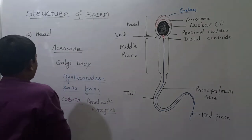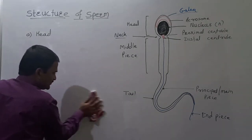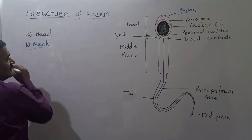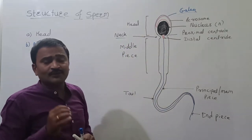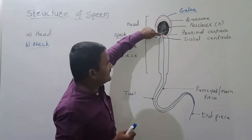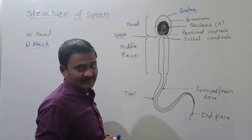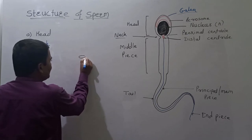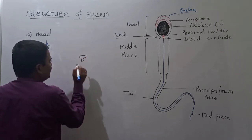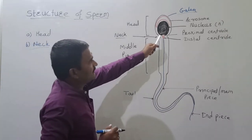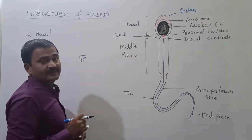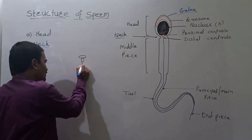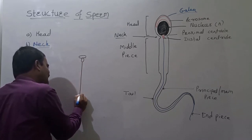The second and very narrow portion of the sperm structure is called the neck. It is narrow and contains only two centrioles: one is called the proximal centriole and the other is called the distal centriole. These two centrioles are placed at right angles to each other. From this distal centriole, a long thread-like structure arises, which is called the axial filament.